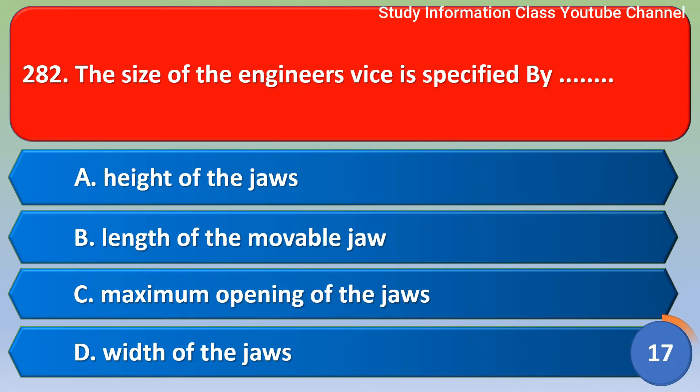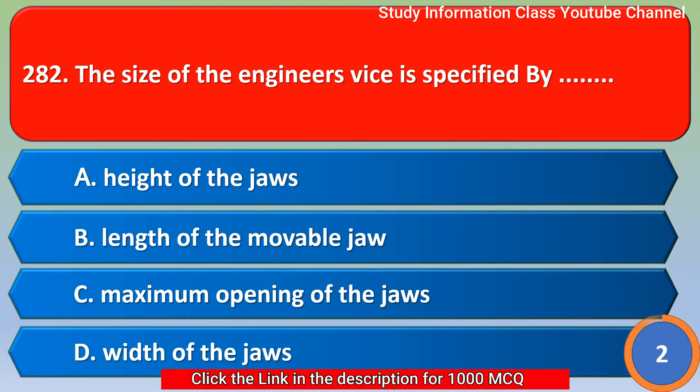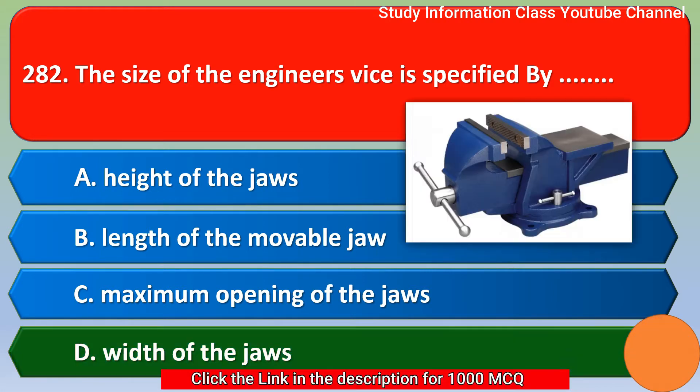Next question: The size of the engineer's vice is specified by: Option A, height of the jaws; Option B, length of the movable jaw; Option C, maximum opening of the jaws; Option D, width of the jaws. The right answer is Option D, width of the jaws.